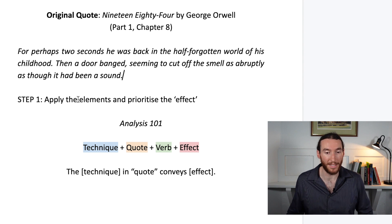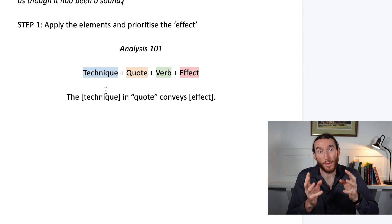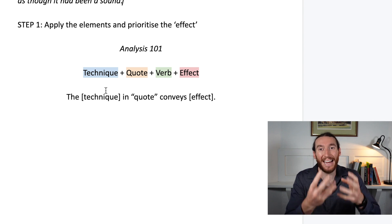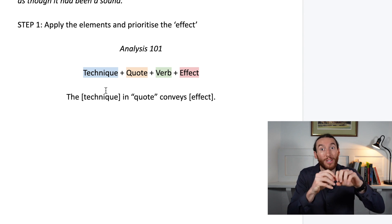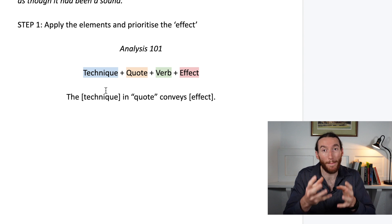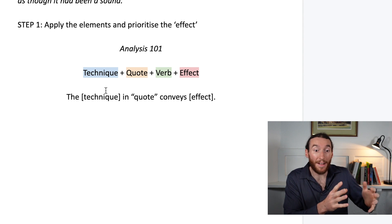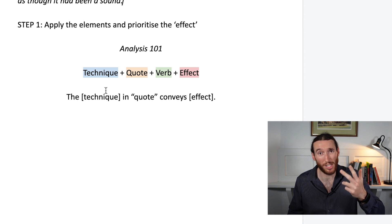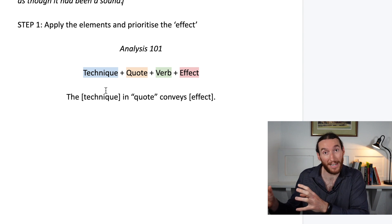Next I'm going to apply the elements we need in every sentence of analysis. There are four elements. We always have a technique — I need to find a language feature or technique used by Orwell in those sentences and label the quote with it. I also need the quote itself, but only as much as is necessary to support the point I'm going to make and clearly demonstrate the technique. Then we're going to include a verb — something like reveals, highlights, suggests, portrays, illustrates — words that help us transition from evidence into explanation.